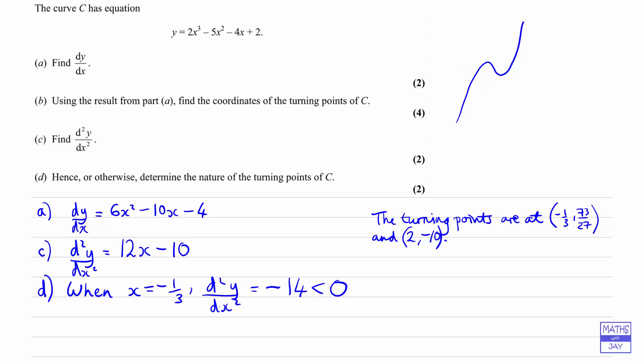Our other value of x should come out with a positive value for the second derivative. When x is 2, d2y by dx squared is going to be 12 times 2 minus 10, so 24 minus 10 is 14, and that's positive. So that tells us that the point 2 negative 10 is a local minimum, as we'd expect. The first value gives us that minus a third, 73 over 27 is a local maximum, and the other one, 2 negative 10, is a local minimum.